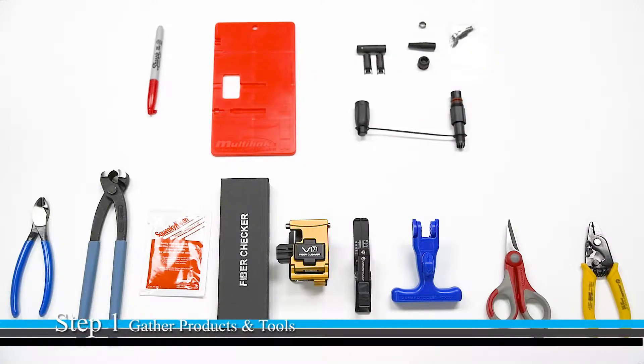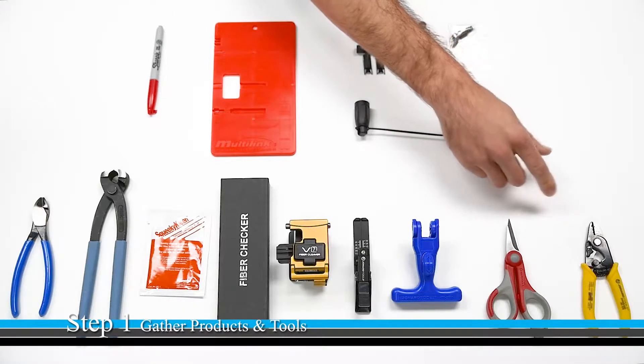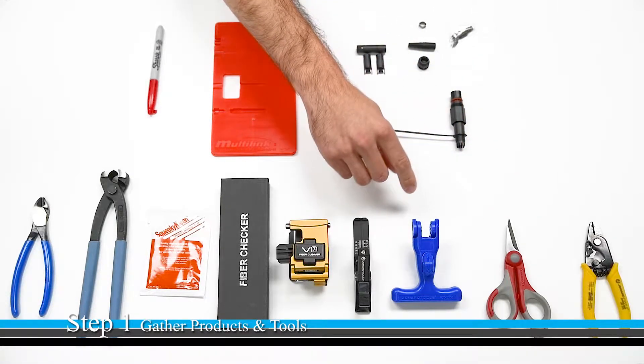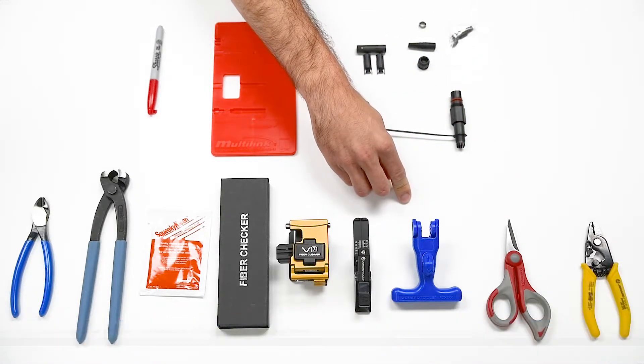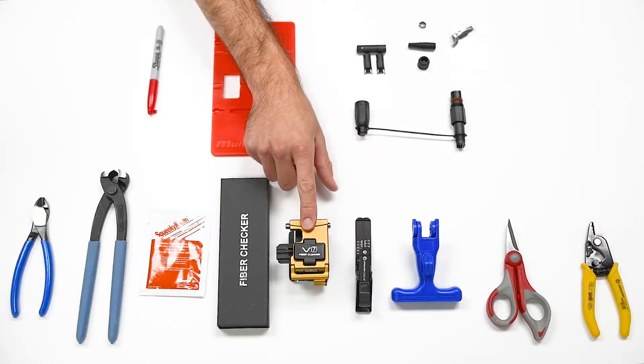Here are the tools that you need to properly terminate Multilink's HIP field installable connector: a three-hole fiber optic stripper, wire and Kevlar cutting shears, fiber optic drop cable slitter, and either a pocket cleaver or a high-precision cleaver.